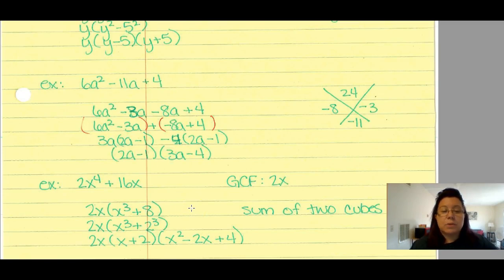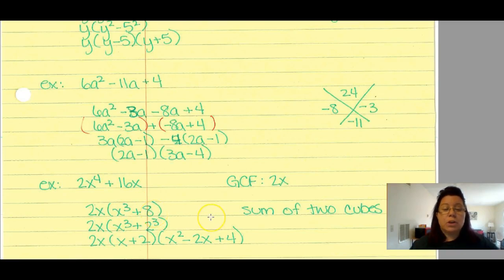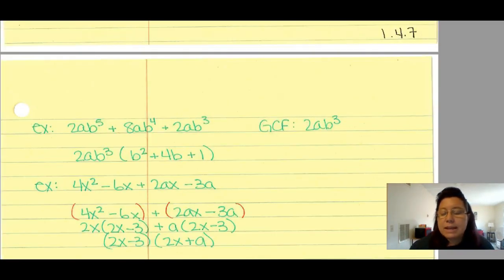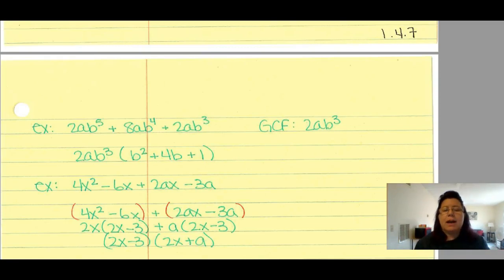For the next example I find the GCF — it looks like 2x is the GCF. Factoring that out leaves x³ − 8. x³ is a perfect cube, 8 is a perfect cube (2³), so I use the difference of cubes formula. x³ − 8 = (x − 2)(x² + 2x + 4). Don't forget the GCF out front: 2x(x − 2)(x² + 2x + 4).